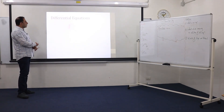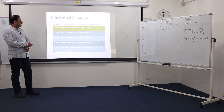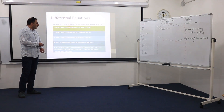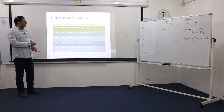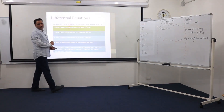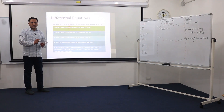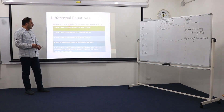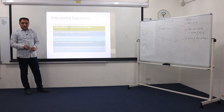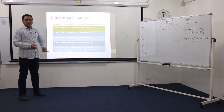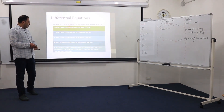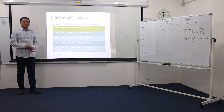Before we start, we're going to observe what we have in this chapter. The objectives are: we are going to be able to solve equations of the form y(n) = f(x). Pay attention — this n is not a power, it's the order of the derivative. For example, y prime, y double prime, y triple prime, and so on. We will also solve differential equations with separable variables, equations of the form ay'' + by' + cy, and at the end, use a helper function to find such solutions.